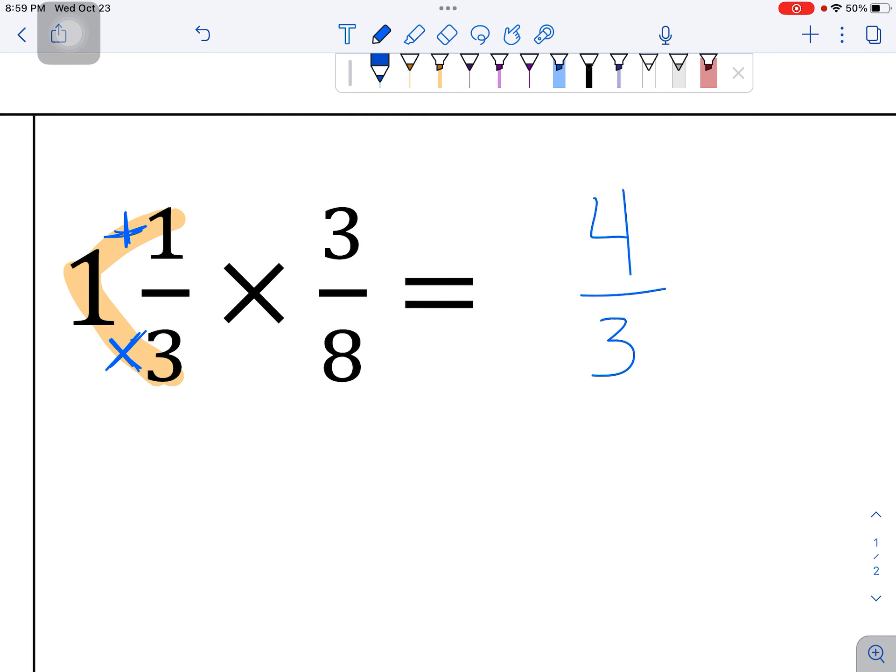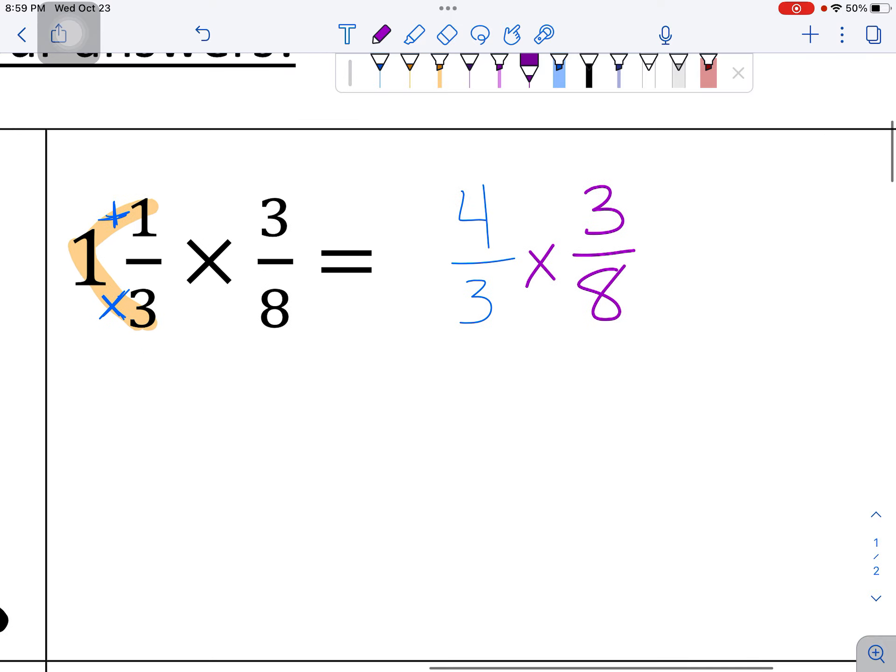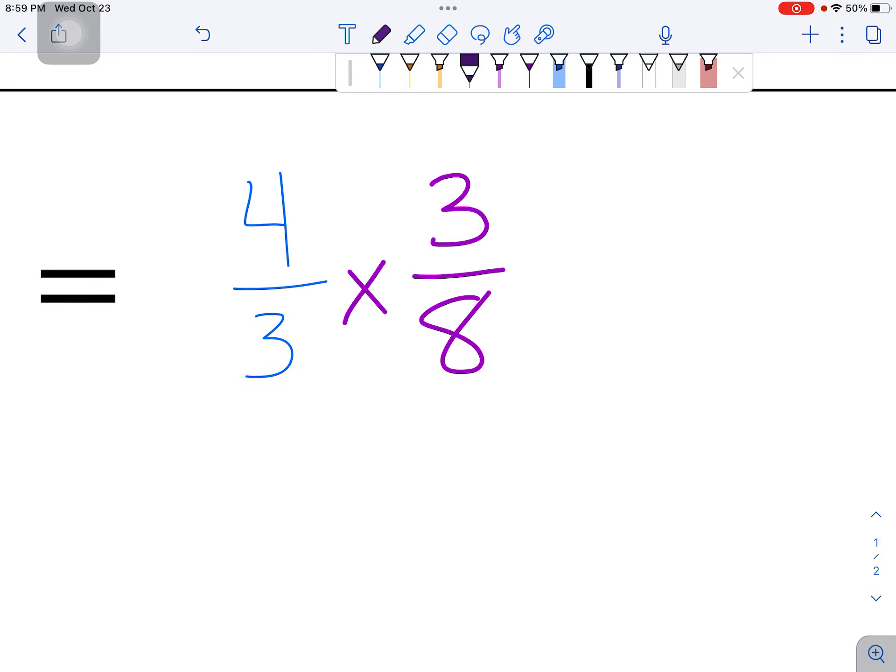The next fraction is a fraction. Do you notice that there's no whole number out in front? So we're just going to leave it alone. At this point, you absolutely 100% can multiply across. Looking at the numerators, 4 times 3 is 12. And looking at the denominators, 3 times 8 is 24. So this answer looks like 12 24ths.